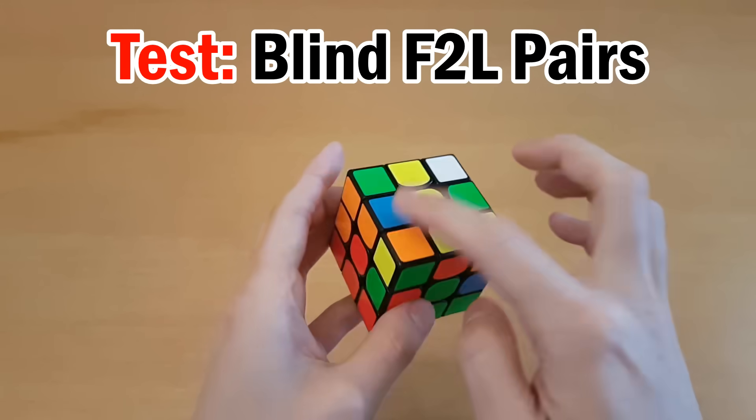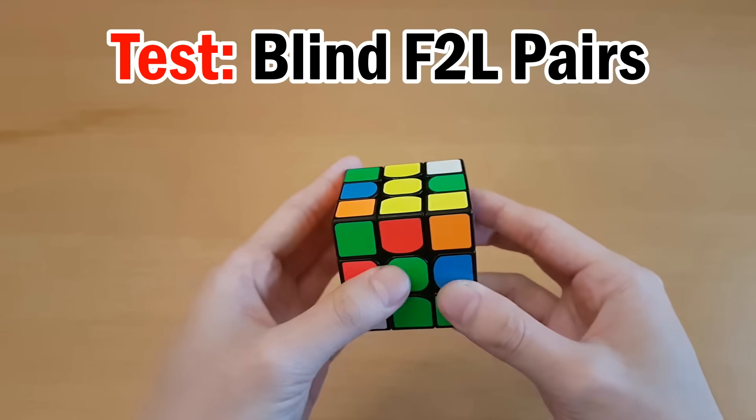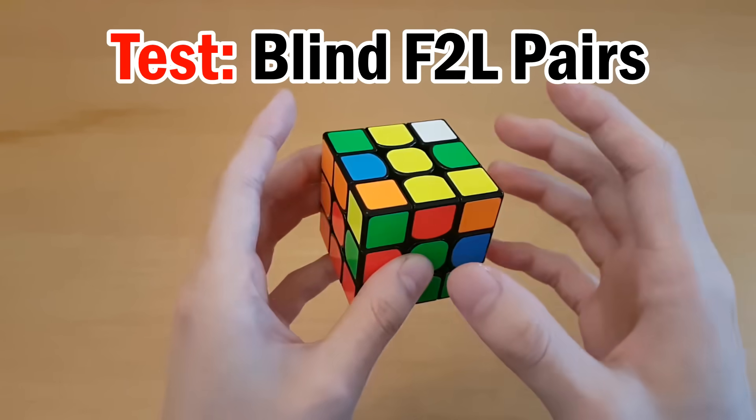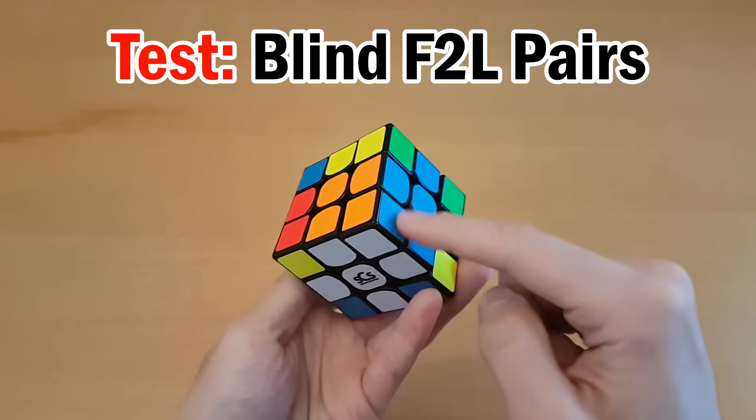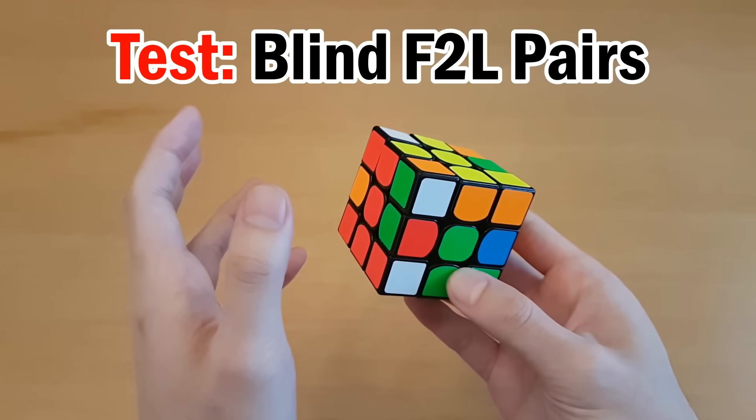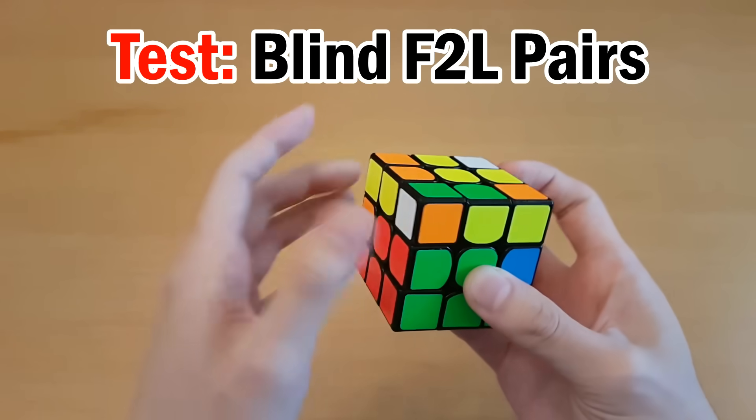So to test if you're at this level yet, every time you see an F2L pair, just close your eyes and then do it as fast as you can with the fastest turns that you can possibly do. And then, so there it is, and then just stop, look at the cube, and then do the next one as fast as you can.